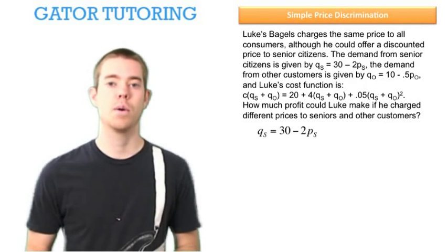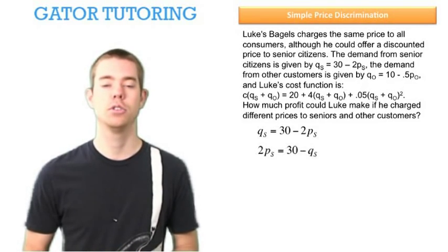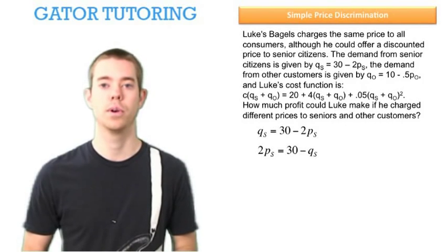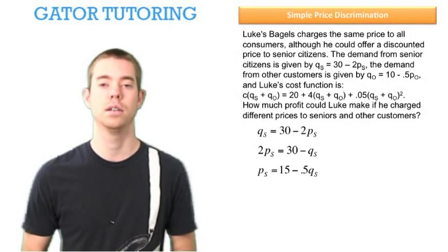Right now we have demand, which is Q on the left and P on the right. We need inverse demand. We add 2PS to each side, subtract QS from each side, then divide through by 2. We see that the price of seniors is PS = 15 - 0.5QS.